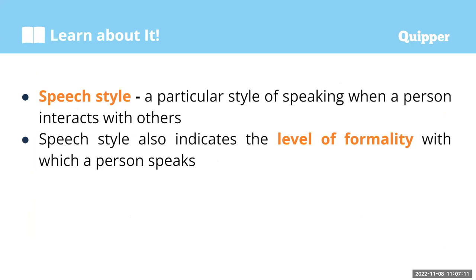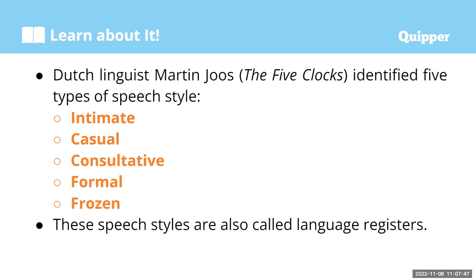Now let's talk about what are speech styles. A speech style is a particular style of speaking when a person interacts with others. This indicates the level of formality with which a person speaks. Formality here doesn't just refer to formal posture; it refers to the type of discipline or casualness you embrace in a discussion with a particular audience or person. Dutch linguist Martin Joos, author of the book 'Five Clocks,' identified five types of speech style: intimate, casual, consultative, formal, and frozen.